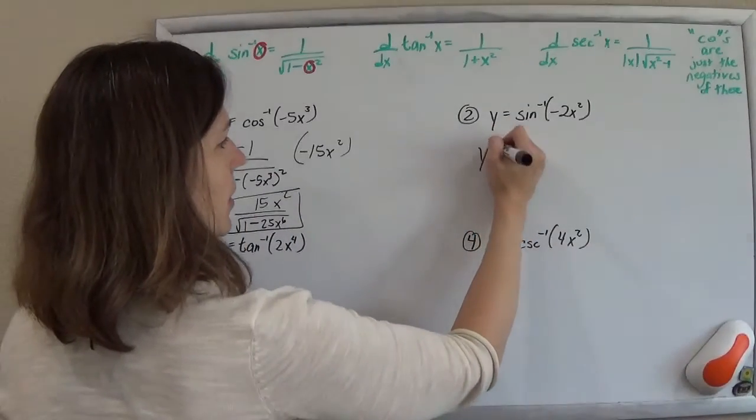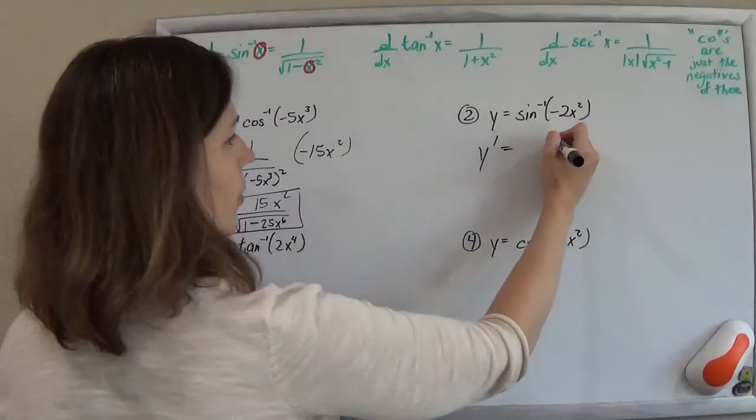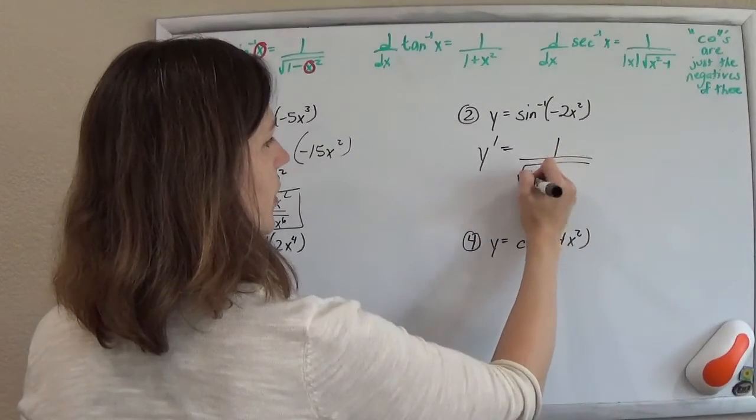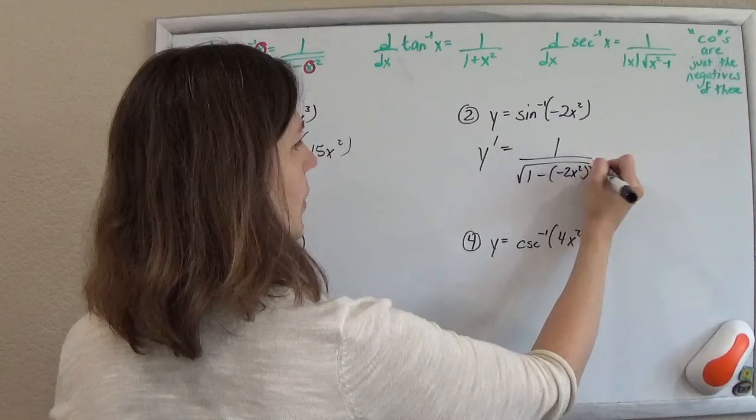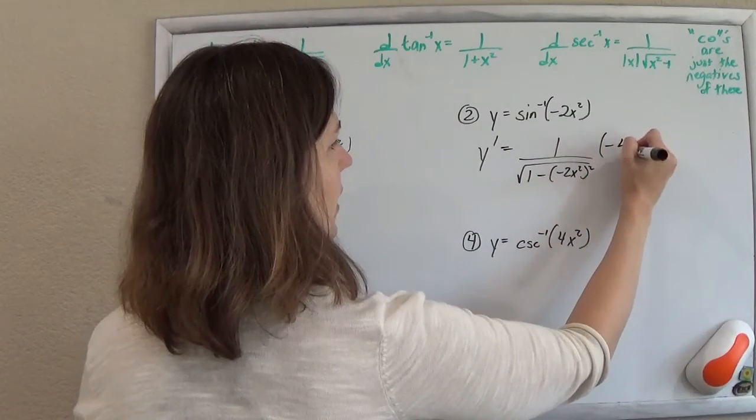We do it again. We do it again over here. We're going to have 1 over the square root of 1 minus this chunk squared times the derivative of that chunk.